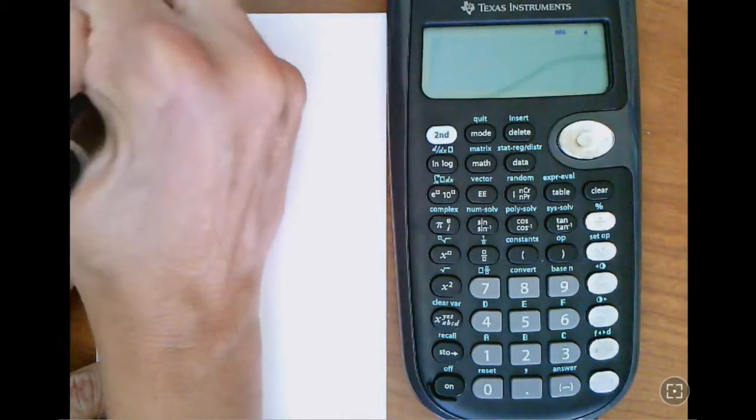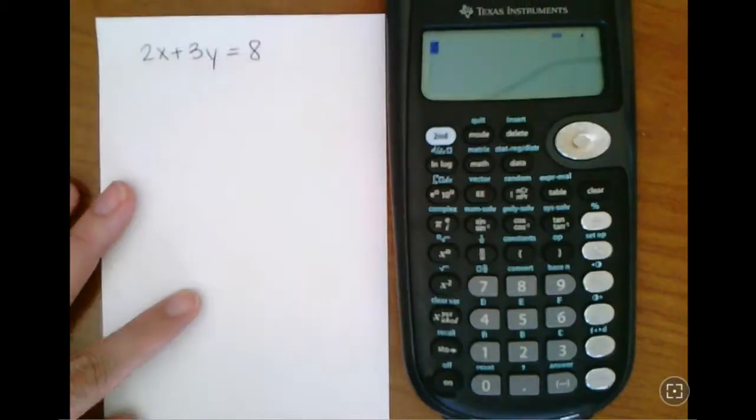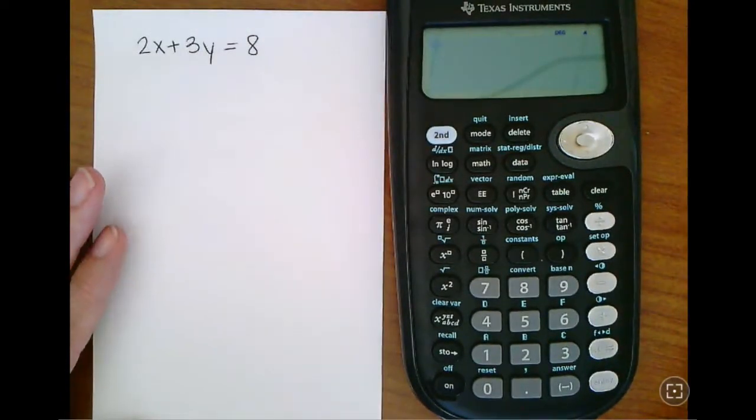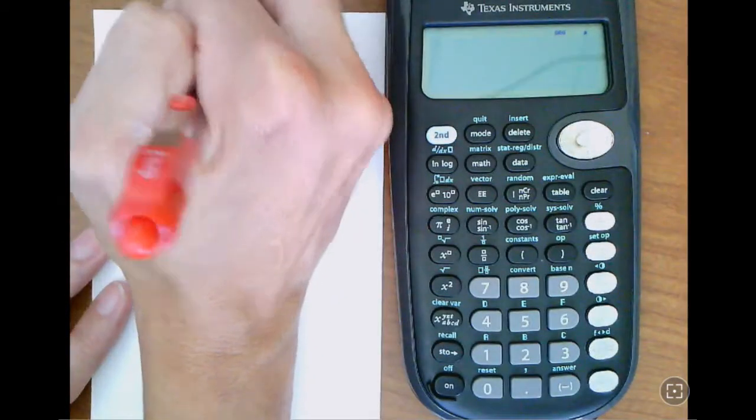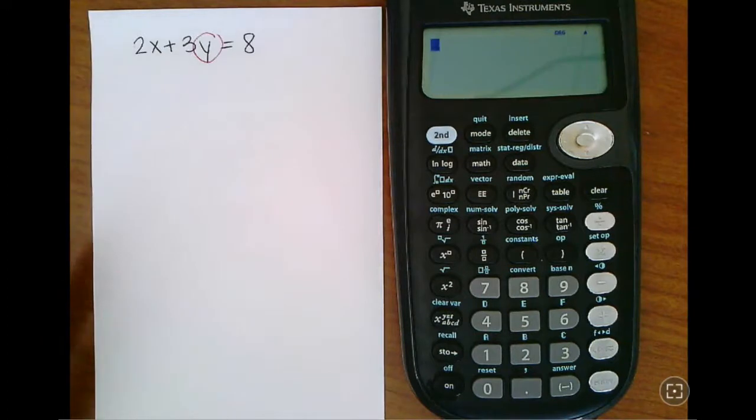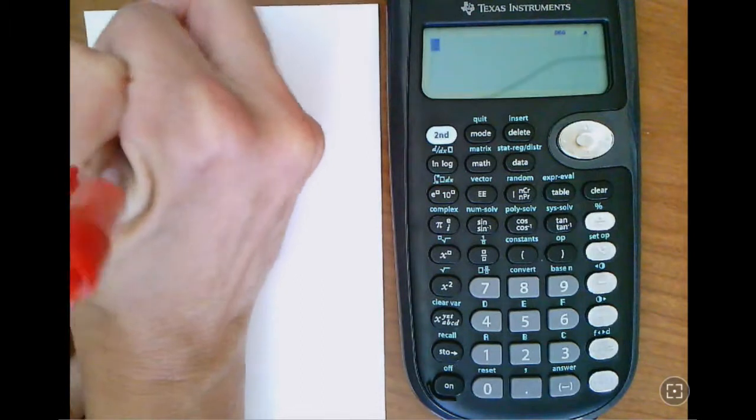So I'm going to bring this back. We're going to do it again. 2x plus 3y equals 8. Let's say I wanted to utilize the table in my calculator because I know it's awesome and will give me a bunch of values. In order to use the table function in my calculator, I need this thing to be solved for y, which means we need to solve this literal equation before we can even get started.